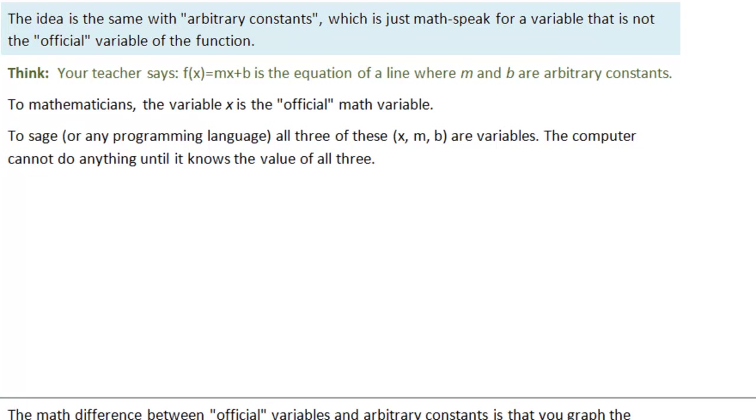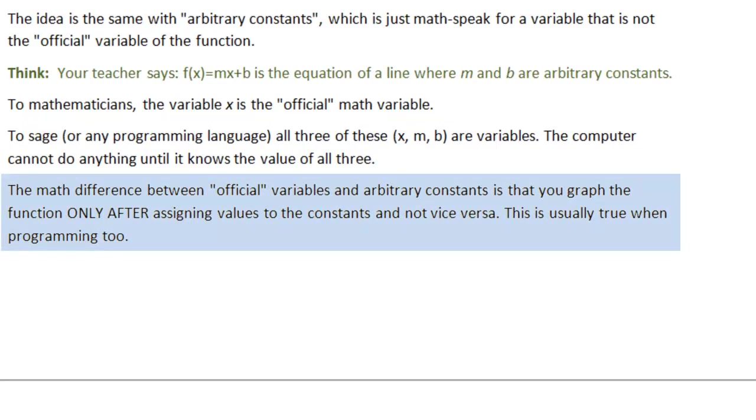The idea is the same with arbitrary constants. Arbitrary constants is just math speak for a variable that is not the official variable of the function. Your teacher says f of x equals mx plus b is the equation of a line where m and b are arbitrary constants. To mathematicians, the variable x is the official math variable. But to Sage or any programming language, all three of these letters, these names x, m, and b are variables. The computer cannot do anything with mx plus b until it knows the value of all three of those variables. The math difference for mathematicians between official variables and arbitrary constants is that you graph the function only after assigning values to the constants and not vice versa. This is usually true in programming. Let's see an example.